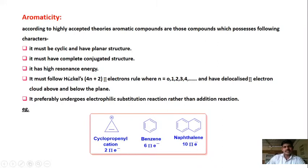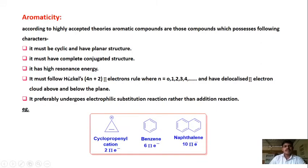Second, it must have a complete conjugated structure. Complete conjugated structure means there should be alternating single and double bonds in the cyclic compound. Third, it must have high resonance energy. More resonating structures means higher resonance energy, so compounds must have higher resonance energy.